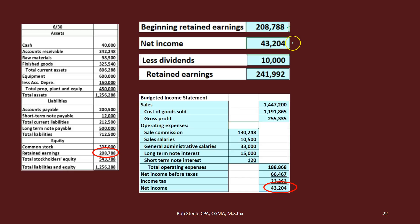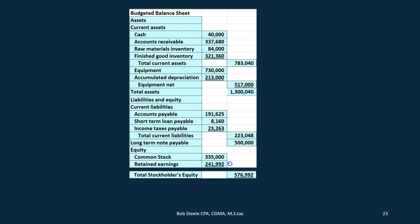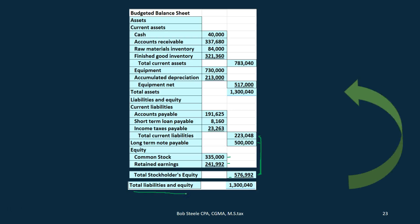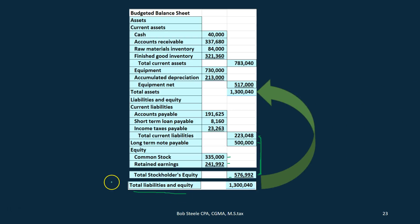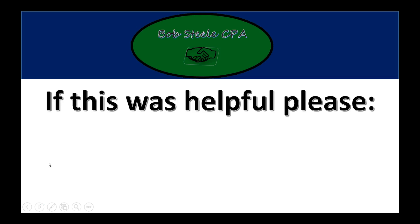We've got $208,788 beginning retained earnings, plus net income of $43,204, minus $10,000 in dividends, giving us ending retained earnings of $241,992. Total stockholders' equity is $335,000 plus $241,992, which gives us $576,992. Adding up the total liabilities and equity — current liabilities plus the long-term note plus total equity — gives us $1,300,040. And of course the total liabilities and equity equals the total assets, so we are in balance on our budgeted balance sheet.